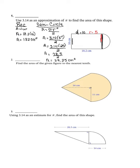To find the total area of this shape, I add the area of the rectangle, which is 182, to the area of the semicircle, which is 39.25. Line everything up correctly, and that gives you 221.25 centimeters squared.